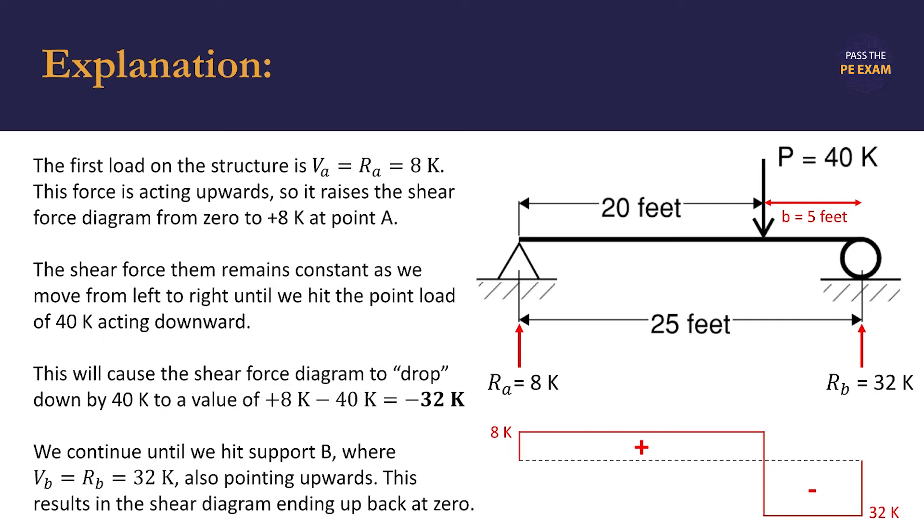This is the 32 kip force pointing upwards. When we add this positive 32 kip force to the negative 32 kips, the shear diagram ends up back at zero.